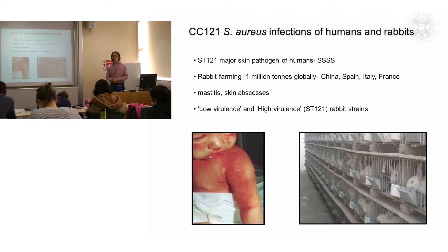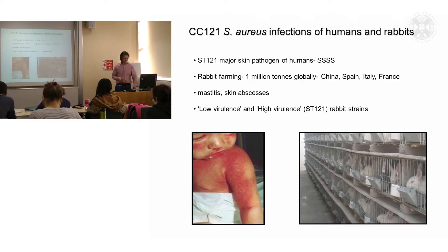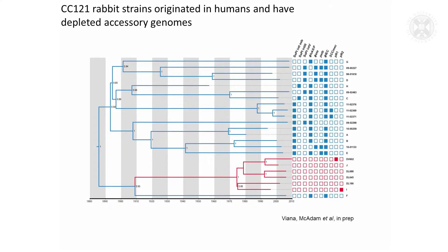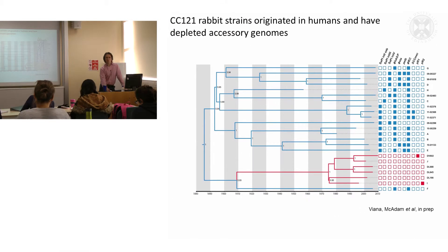Similar to the CC97 story, we want to try and understand the relatedness of these rabbit and human strains and how they may have evolved. This is another phylogenetic tree based on whole genome sequencing of CC121 isolates. Human strains are shown in blue and rabbit strains in red. The rabbit strains are more closely related to each other than they are to human strains.